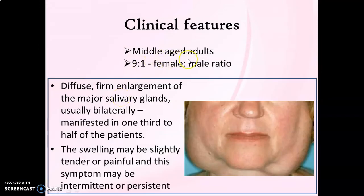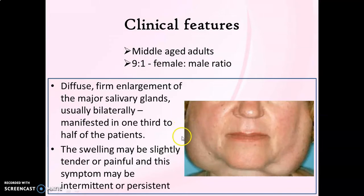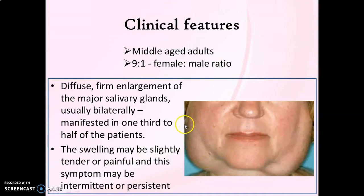Moving on to the clinical features of Sjögren's syndrome, it commonly affects mid-aged adults with a very high female predilection. It is found to be 9 times more common in females than males, similar to any other autoimmune disease. It principally affects the major salivary glands and lacrimal glands, and may cause enlargement of salivary glands, usually bilaterally. This enlargement may be appreciated in one third to one half of the patients. The swelling or enlargement may be slightly tender or even painful, and pain if present may be intermittent or even persistent.